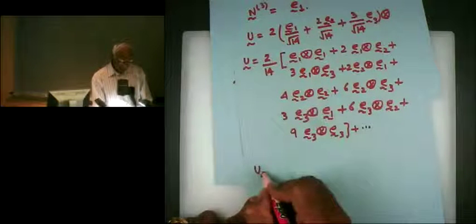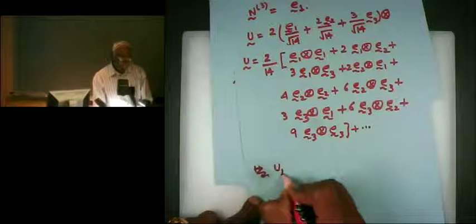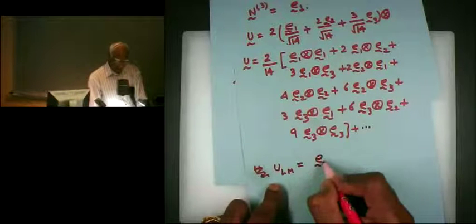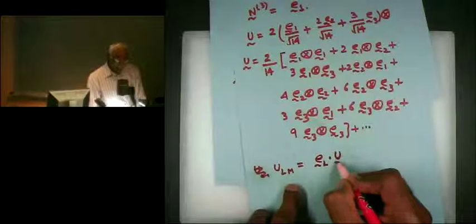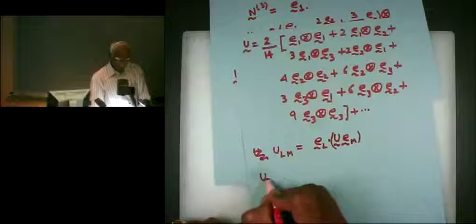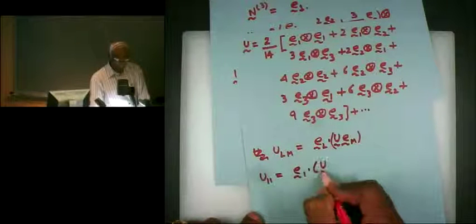So if you want to write this in matrix form, there are two ways to do it. You can either look at these terms directly, or you can say U_LM equals E_L dotted with U operating upon E_M. U operating upon E_M will give us a vector, then you dot it with E_L to get the component. So U11 equals E1 dotted with U applied to E2.